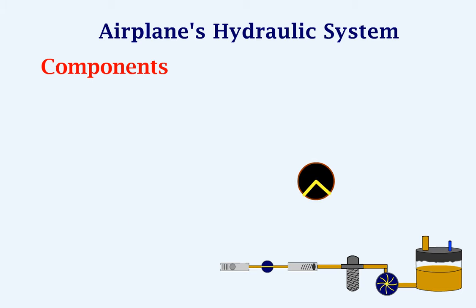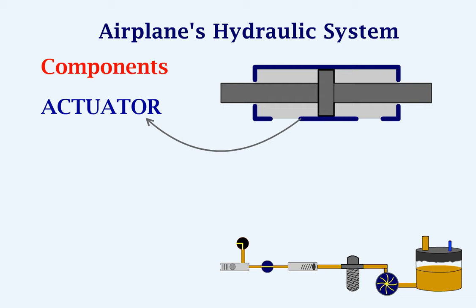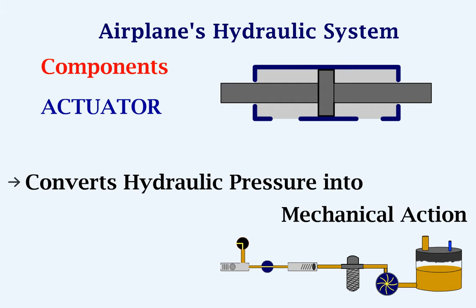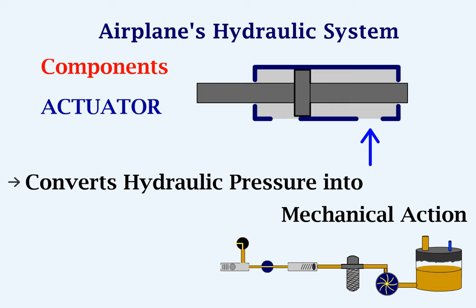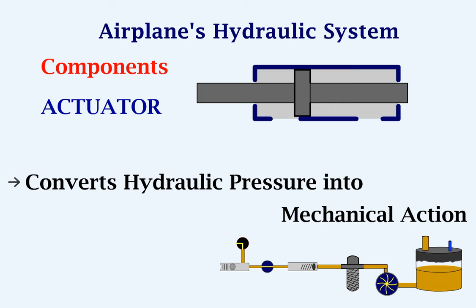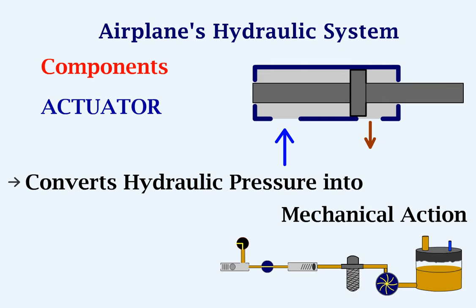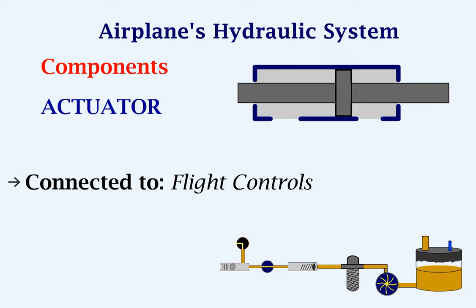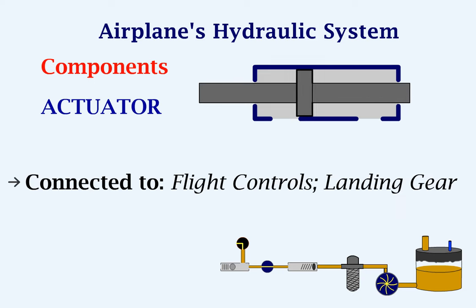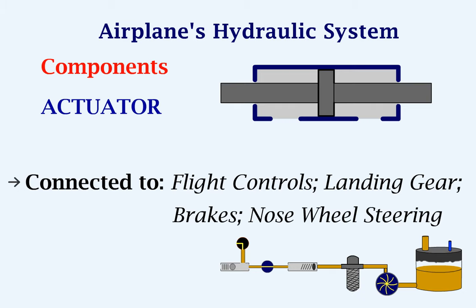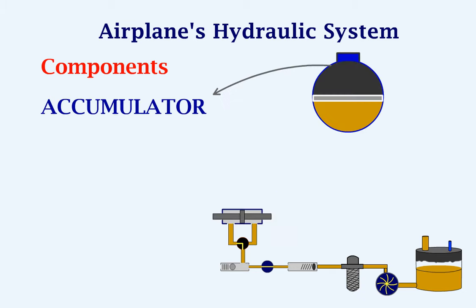The next component we will look at is the actuator. This is used to convert hydraulic pressure into mechanical action. If the fluid enters here, the piston in the actuator moves in this direction and the fluid from the other side is sent back to the reservoir. Similarly, if the fluid enters from this side, the piston moves in this direction and the fluid from the other side is returned to the reservoir. This actuator can be connected to the primary or the secondary flight controls, the landing gear, brakes, and the nose wheel steering.